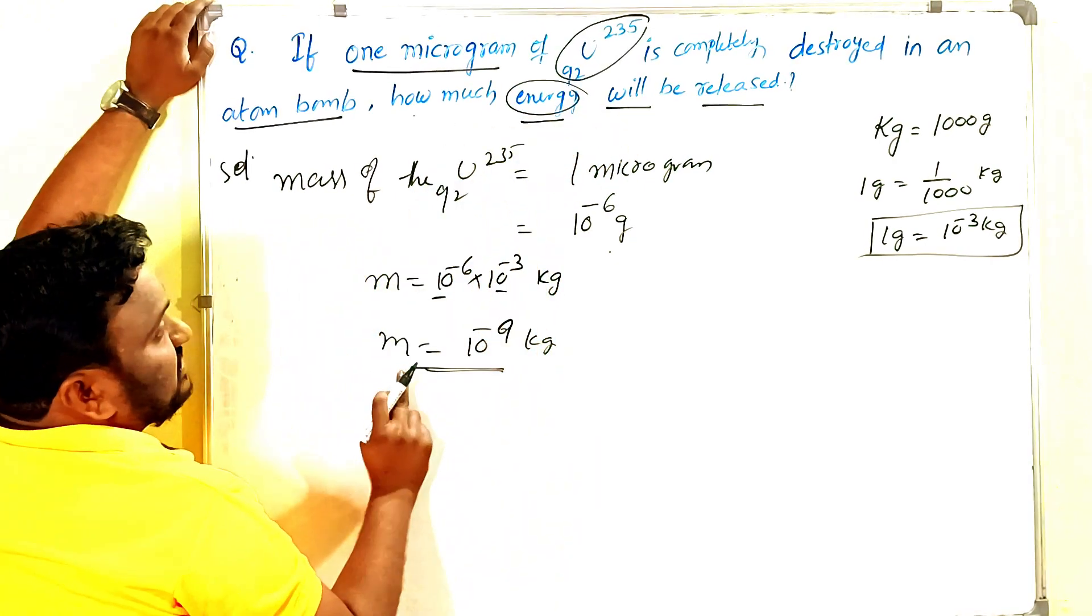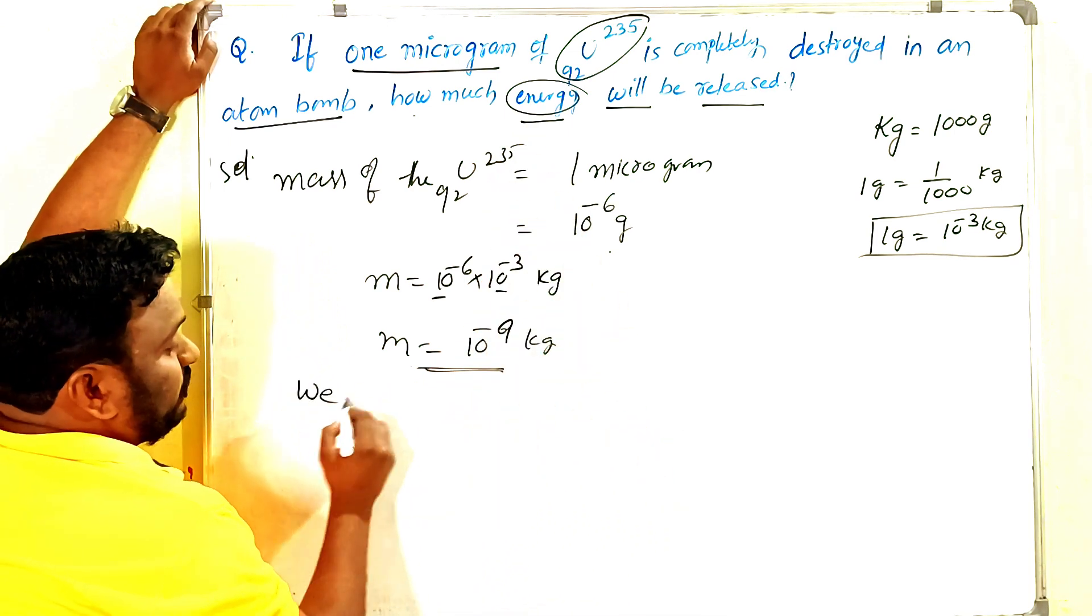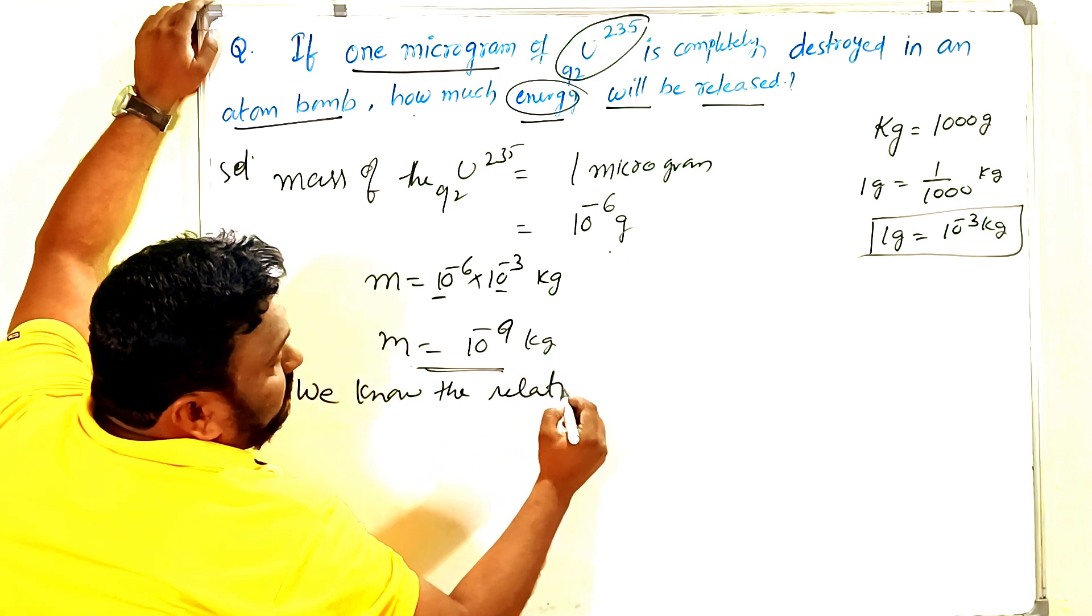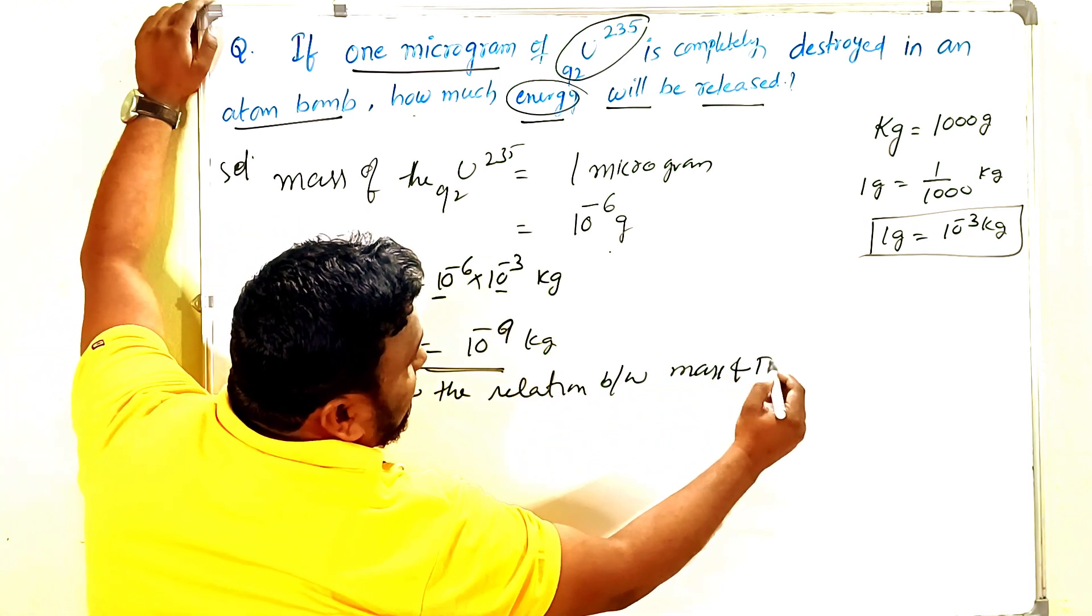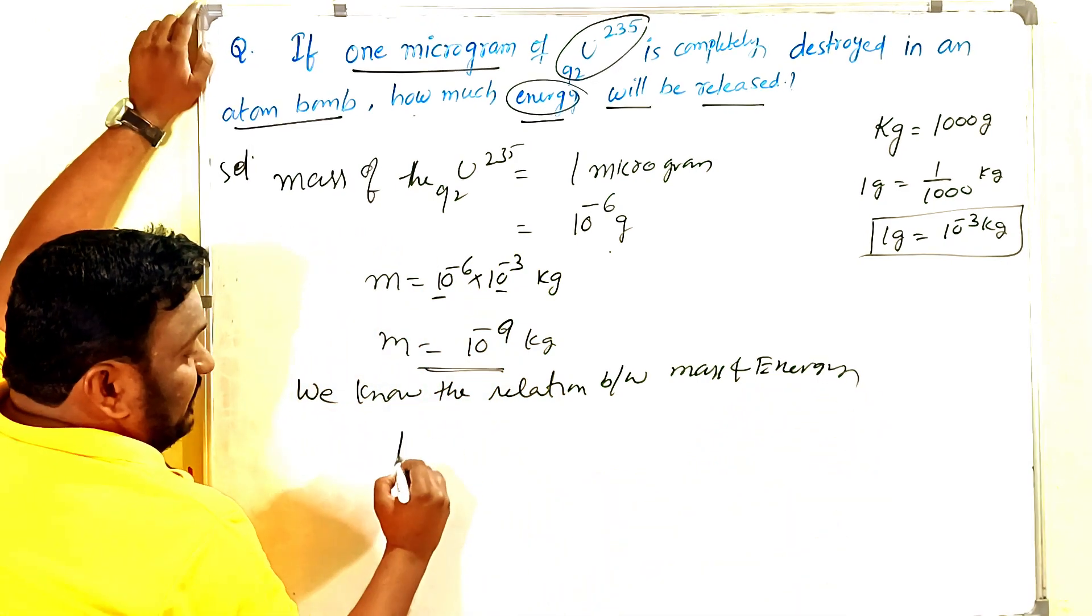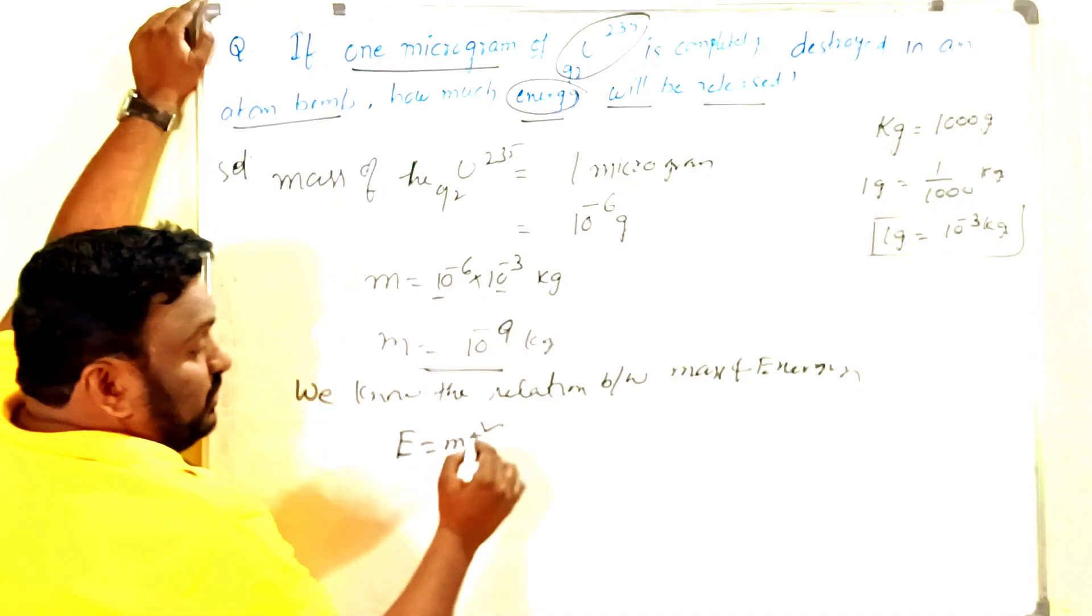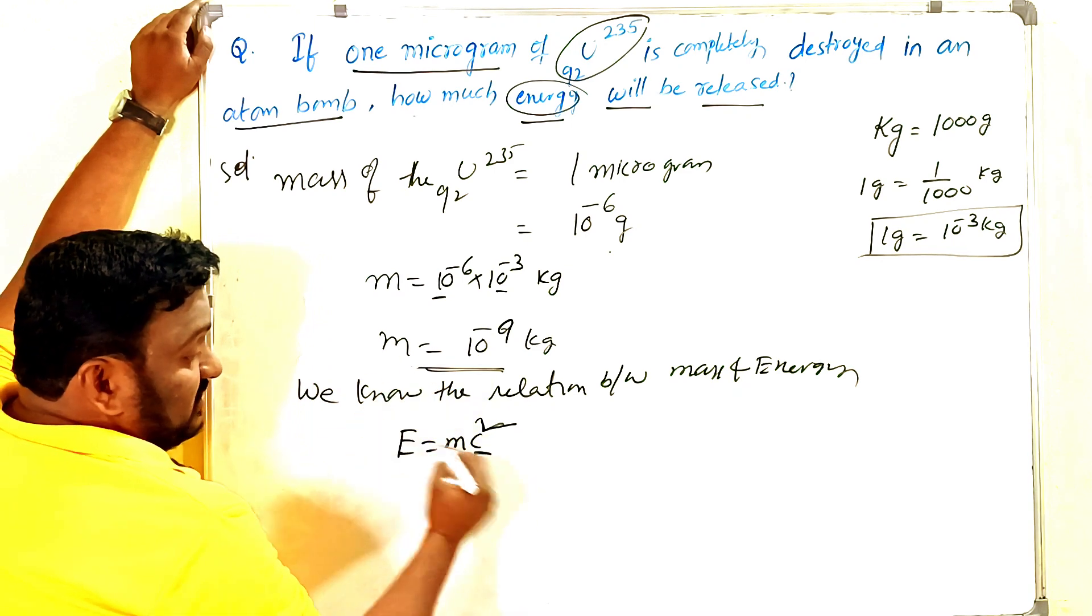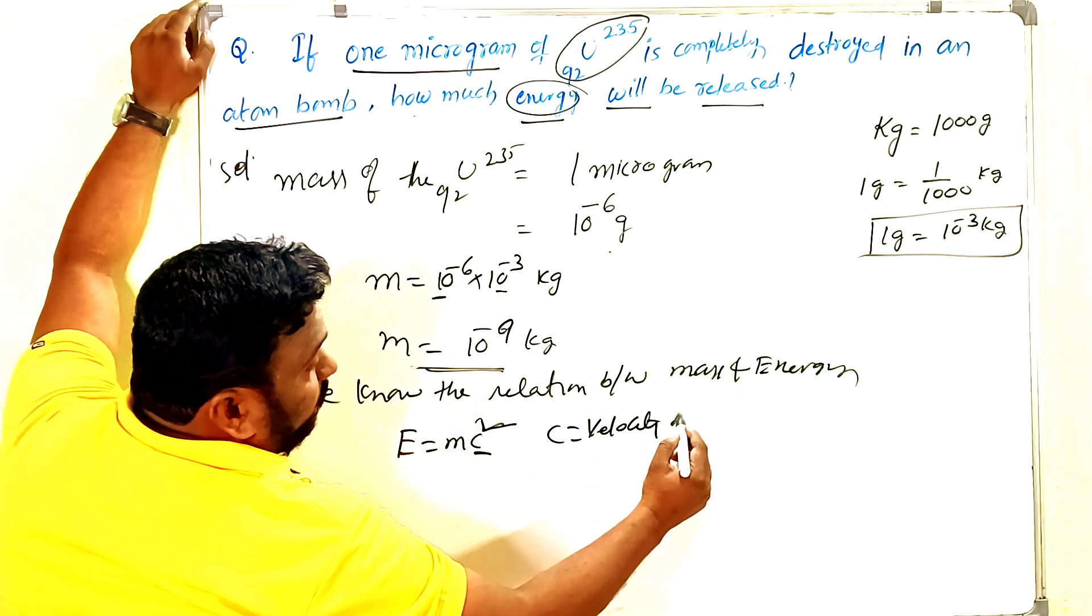And what you have to find out? Energy. So mass is there and energy is there. Already we know the relation between mass and energy, that is Einstein's equation: E is equal to mc square.